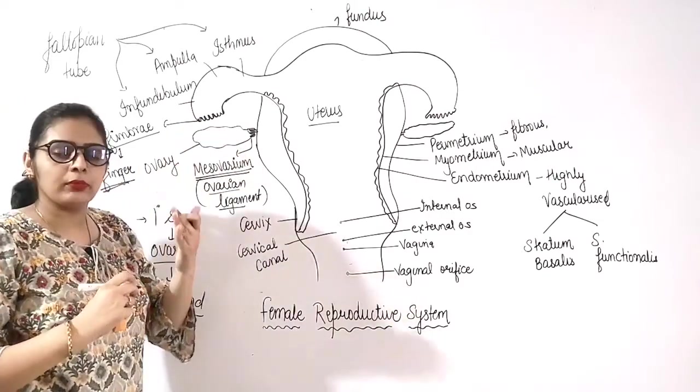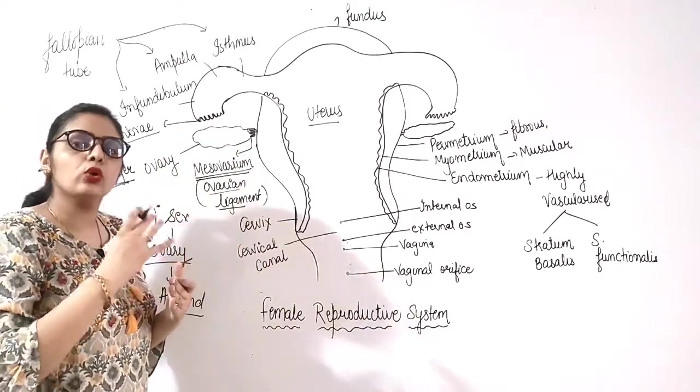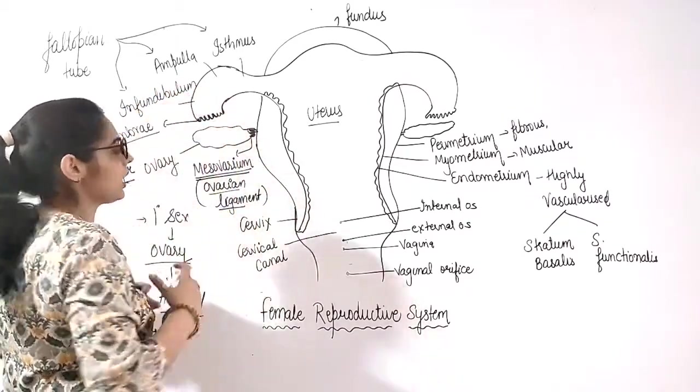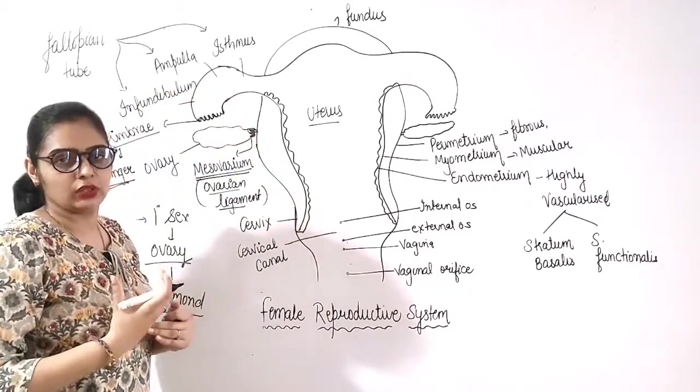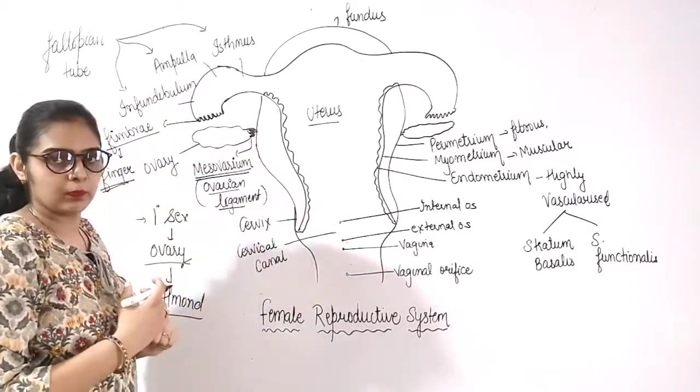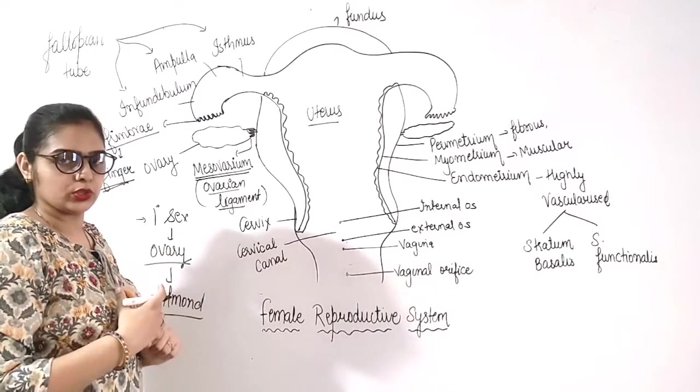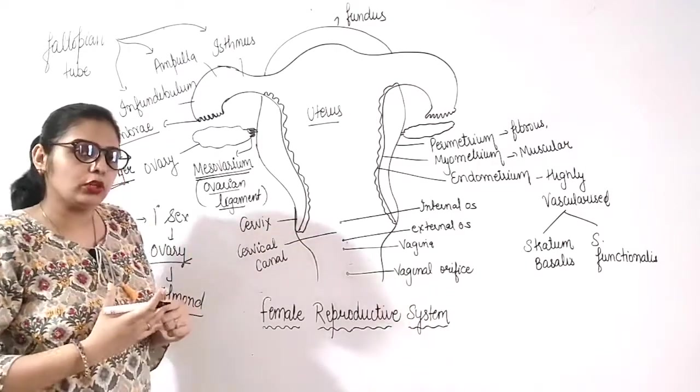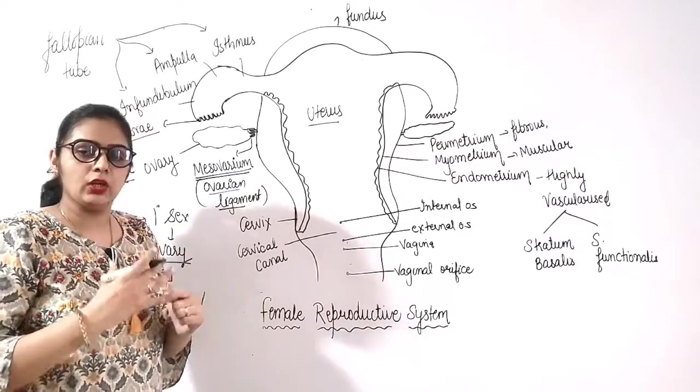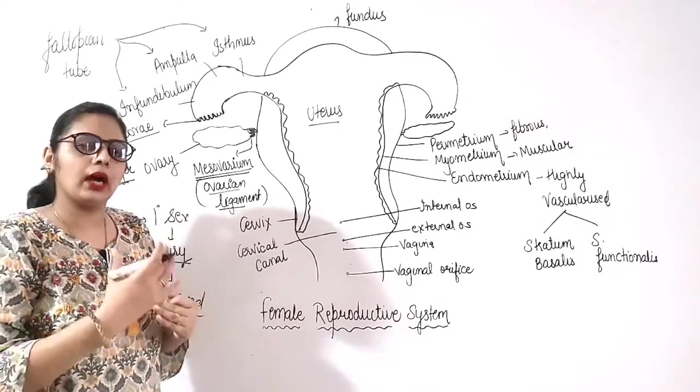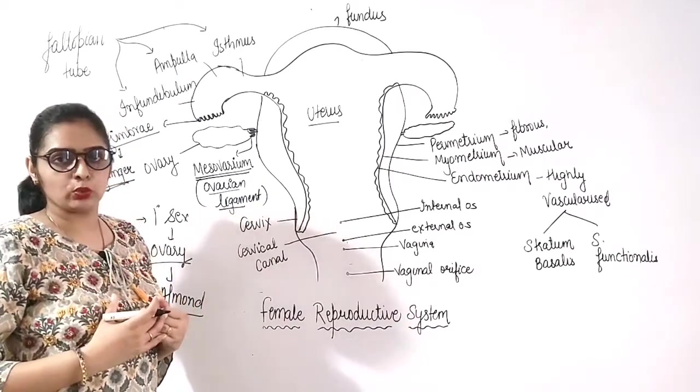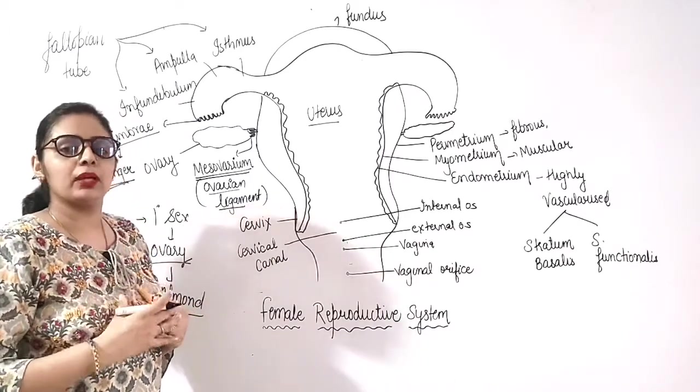When the egg is released, the fimbriae catch that ovum. And we can say the secondary oocyte. Because the secondary oocyte is released. When the male gamete reaches, then the ovum will be formed. So, we will discuss later on how the oocyte forms, then how the female gametes complete development, maturation, we will discuss later on.